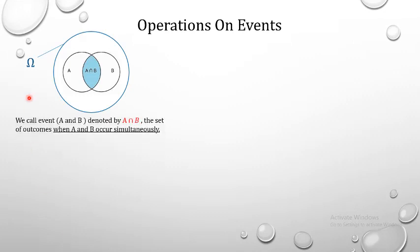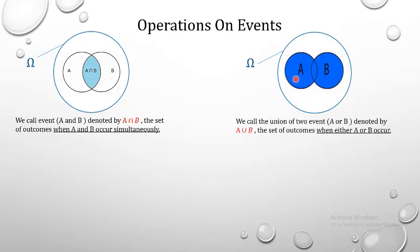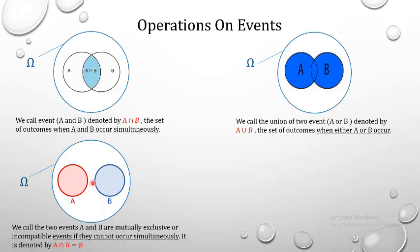Operations on events: given the universe set with two events A and B, the intersection A∩B is the set of outcomes when A and B occur simultaneously. The union A∪B is the set of outcomes when either A or B occurs. If the two sets A and B are disjoint — no intersection — we call the two events mutually exclusive or incompatible, denoted by A∩B = phi.